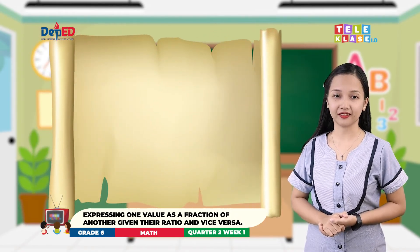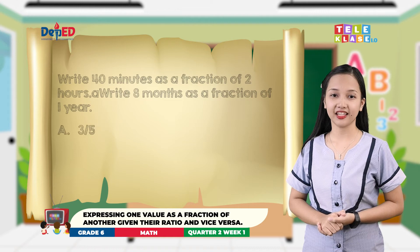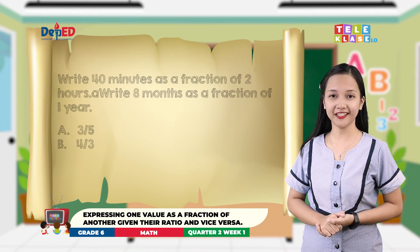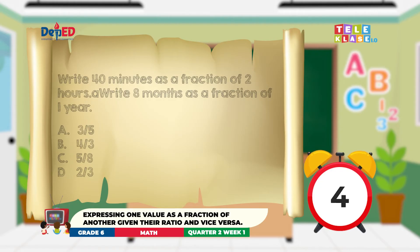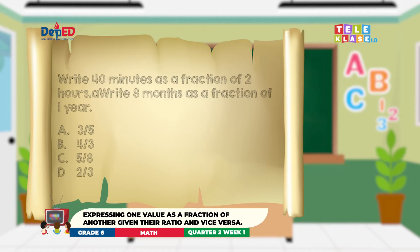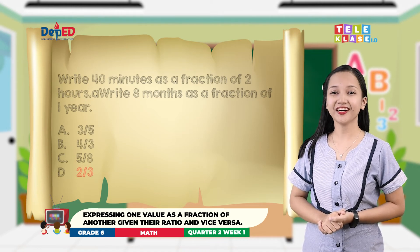Box two question: Write eight months as a fraction of one year. A, three-fifths; B, four-thirds; C, five-eighths; D, two-thirds. The correct answer is eight over twelve, or two-thirds.